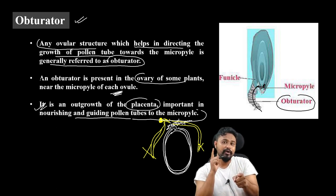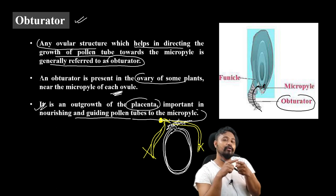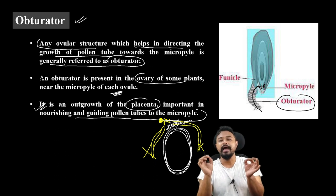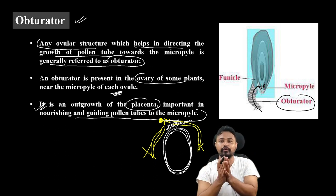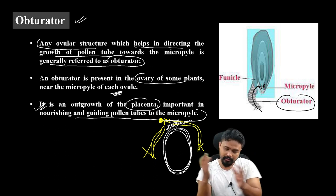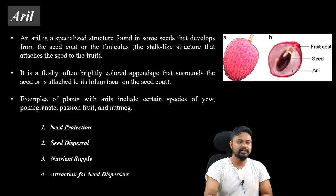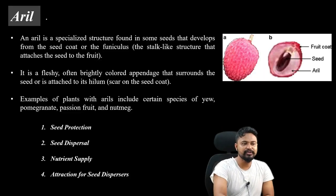The pollen tube helps ensure successful fertilization so that the male gamete will be fused with the egg. Next, the special structure is the aril.